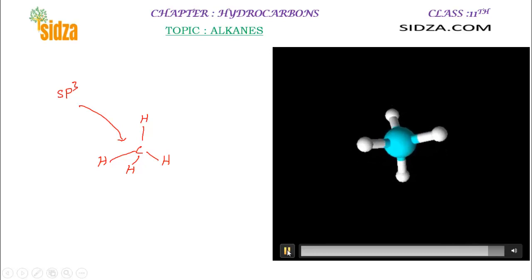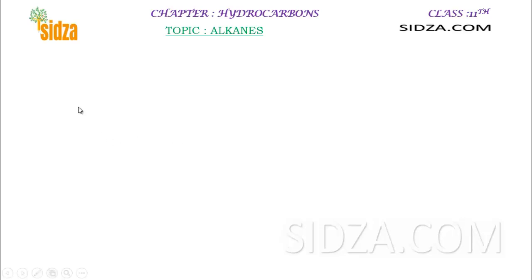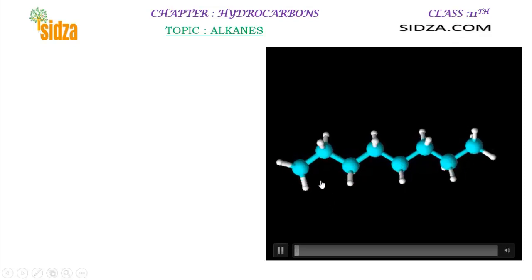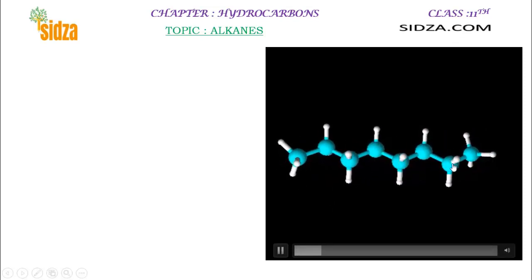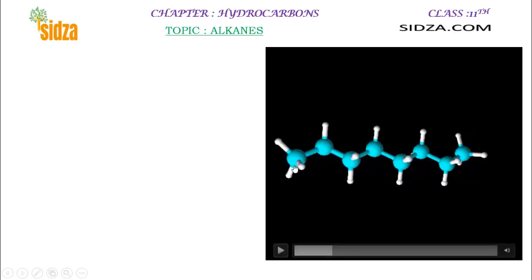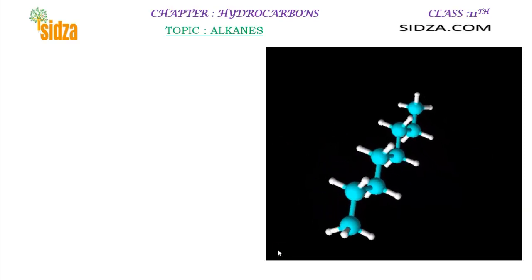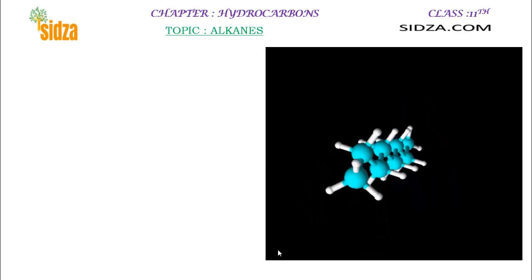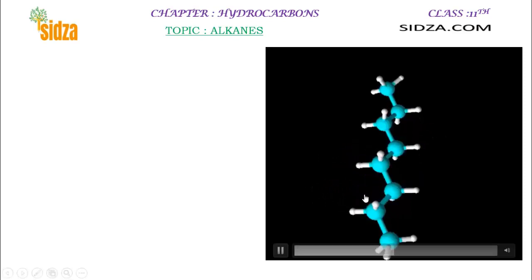If you have a long chain molecule — suppose you have a very long chain molecule — let's see how a long chain hydrocarbon looks. You can see here there are eight carbon atoms in this molecule, and each carbon atom is sp3 hybridized. This is an eight-carbon molecule, so this will be an octane.